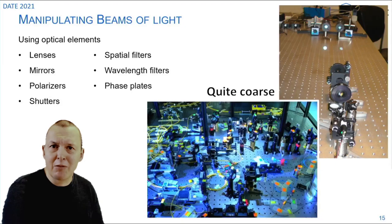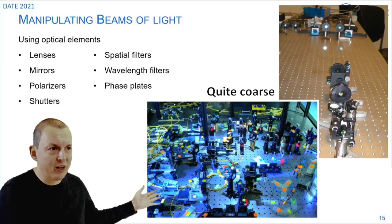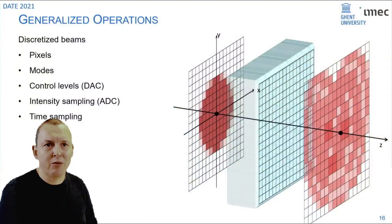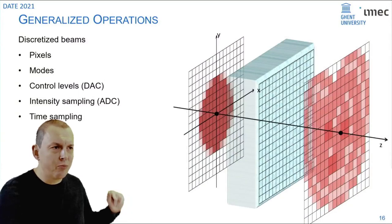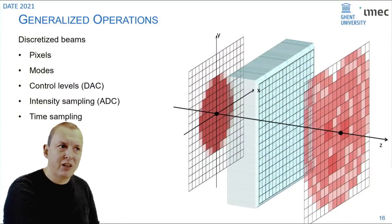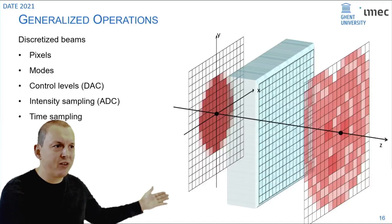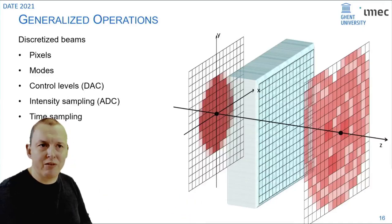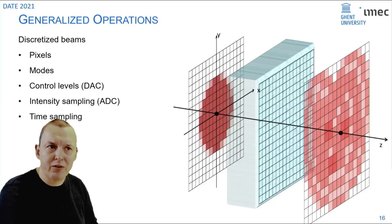If you want to do this in a more programmable way you need to come up with ways to manipulate such a system in real time. This can be done by using spatial light modulators. In that case you discretize your beam of light into pixels at the input with a spatial light modulator at the output with a photo detector or a detector array or an imager.